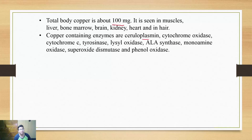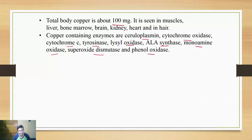Ceruloplasmin you already know from iron metabolism as ferroxidase. Cytochrome oxidase in biological oxidation, cytochrome C, tyrosinase in melanin synthesis, lysyl oxidase in collagen synthesis, allosynthase in heme synthesis, monoamine oxidase (MAO) for degradation of catecholamines, superoxide dismutase in free radicals, and phenyl oxidase. Just remember any three of these names so that when the examiner asks you to name any copper-containing enzymes, you can link to one of these pathways.